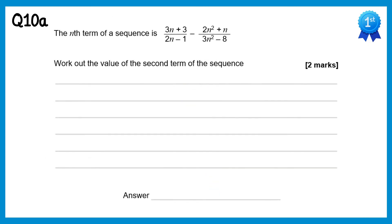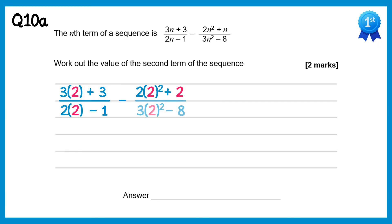For this question we need to work out the value of the second term, so we substitute n equals 2. The first fraction gives 3 lots of 2 plus 3 over 2 lots of 2 minus 1, which is 9 over 3, equal to 3. The second fraction gives 2 lots of 2 squared plus 2 over 3 lots of 2 squared minus 8, which is 10 over 4, equal to 2.5. So the second term is 3 minus 2.5, which equals 0.5.